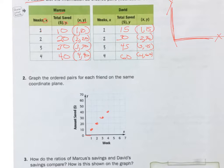I'm going to do David in blue. On his first week, he gets $15. And his second week, he's going to get $30. On his third week, it's going to be $45. And on his fourth week, it's going to be $60.